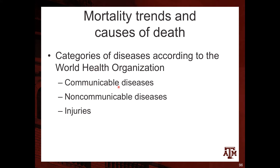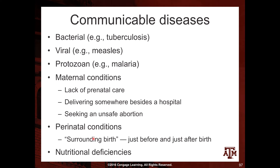The WHO categories of diseases are communicable diseases, non-communicable diseases, and injuries. Communicable diseases include bacterial diseases such as tuberculosis, viral diseases such as measles, protozoan diseases such as malaria, and maternal conditions such as lack of prenatal care, delivering outside a hospital, or seeking an unsafe abortion.